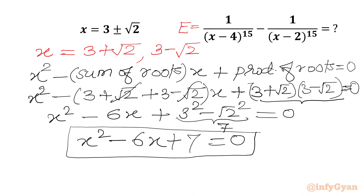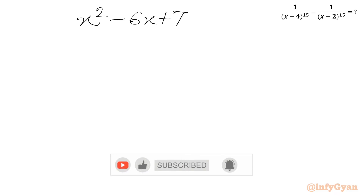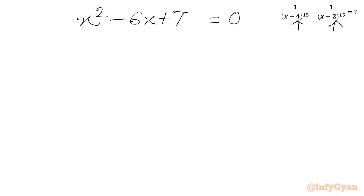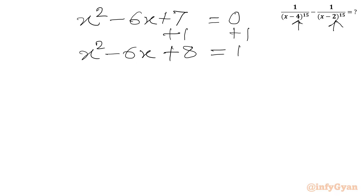Now our required expression is here. I will use one algebraic manipulation step. Let me write the quadratic x squared minus 6x plus 7. As I can see 4 and 2 appear in the expression, so let me add 1 to both sides: x squared minus 6x plus 8 on the LHS and 1 on the RHS. Now we can easily factorize the LHS, writing minus 6x as minus 4x minus 2x, then plus 8 equal to 1.